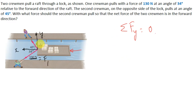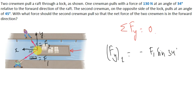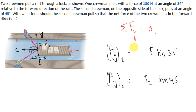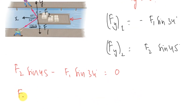Let F1 be the first force and F2 be the second. The Y component of the first force is negative F1 sin(34°) — negative because it is along the negative Y direction. The Y component of the second force is F2 sin(45°). Setting the net Y force to zero: F2 sin(45°) minus F1 sin(34°) equals zero.